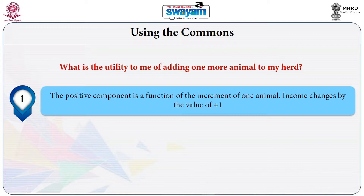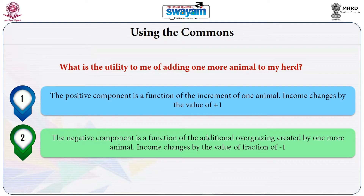In our example, income increases from 20,000 to 30,000 when animals increase from two to three, and from 30,000 to 36,000 when going from three to four. The negative component is a function of the additional overgrazing created by one more animal — as the quantity and quality of fodder declines, the productivity and market value of each animal goes down. In our example, when numbers exceed 30, the market value declines from 10,000 to 9,000 rupees per animal.